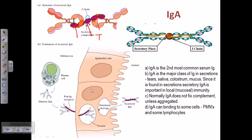Now, why are the J chain and secretory component attached to IgA? Usually IgA is a monomer. The plasma cell secretes two IgA monomers along with small J chain peptide molecules. They attach to the J chains to form a dimeric structure. This dimeric IgA can then be recognized and bound by poly Ig receptors present on the epithelial cells, which are ready for secretion.